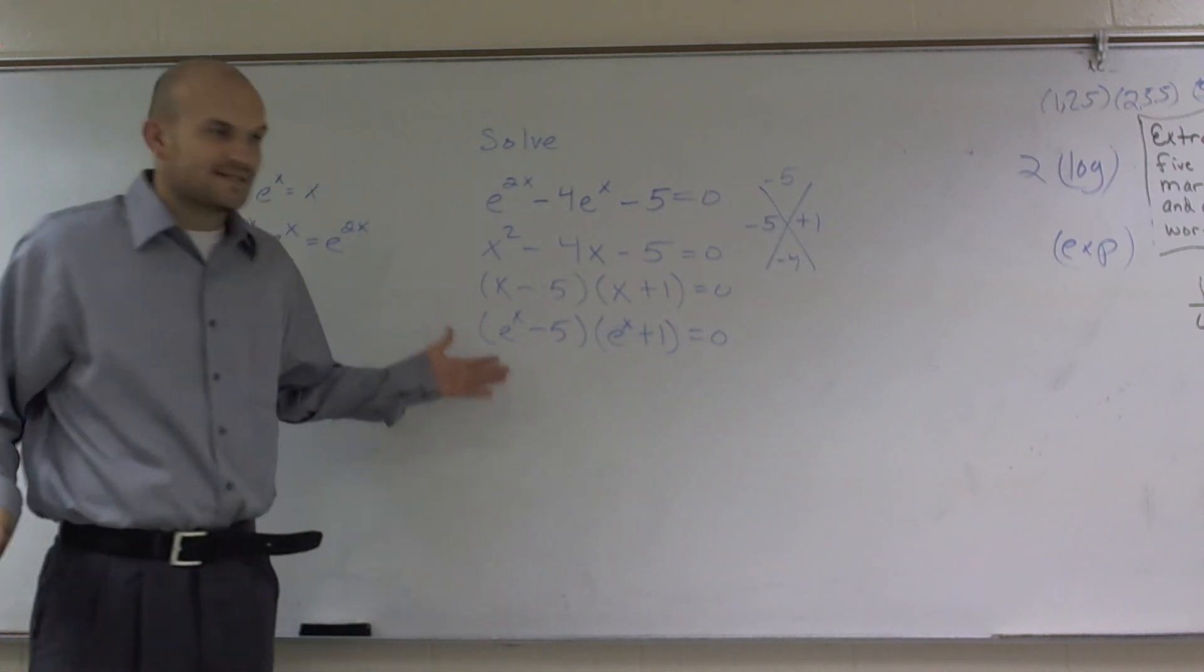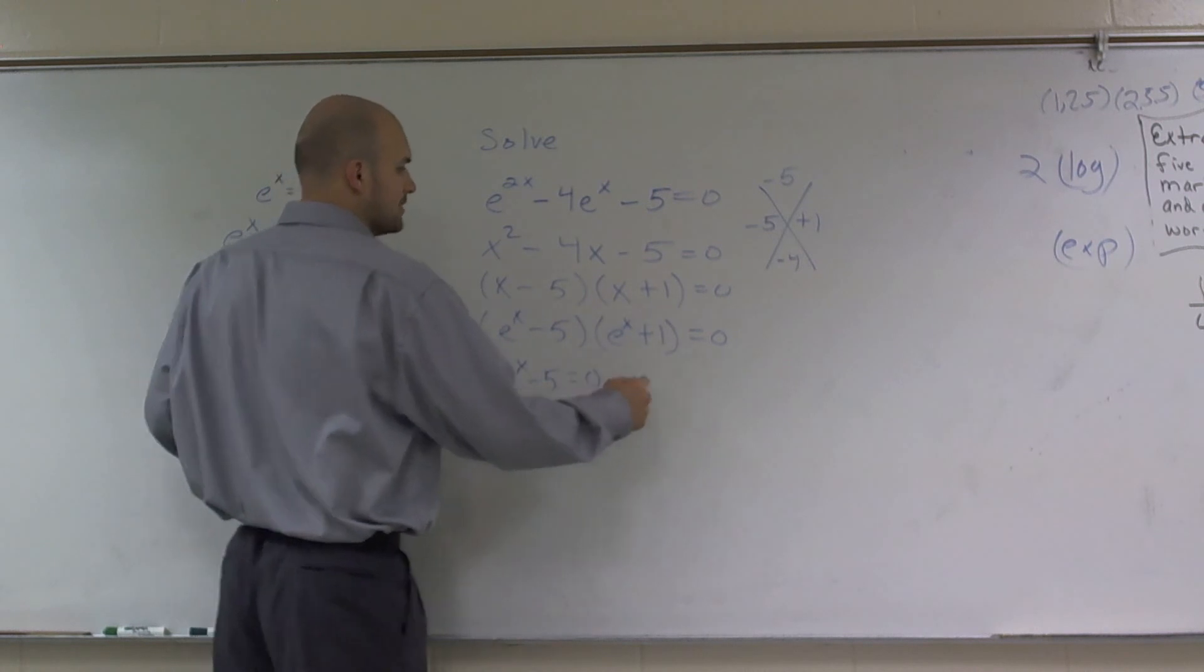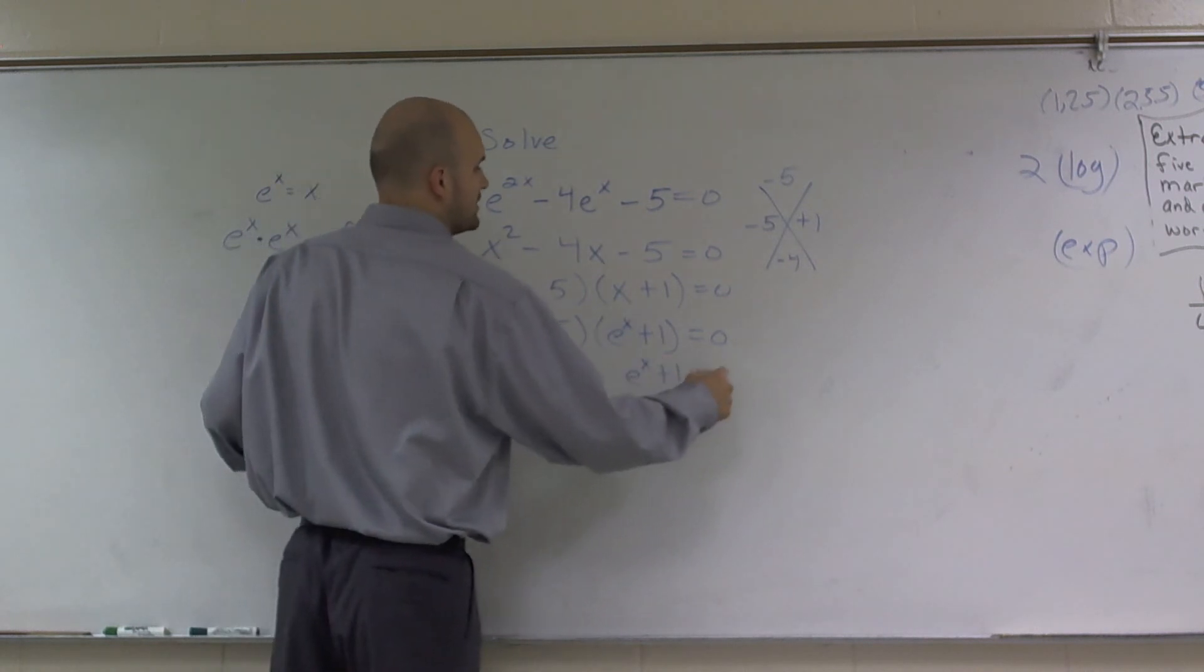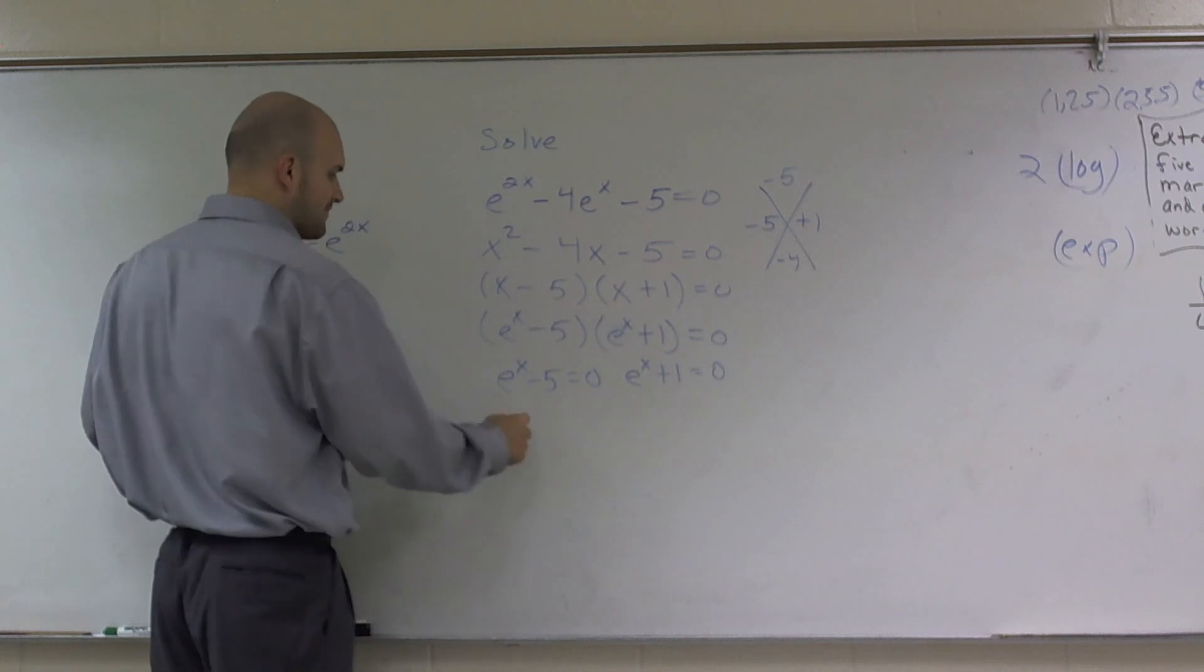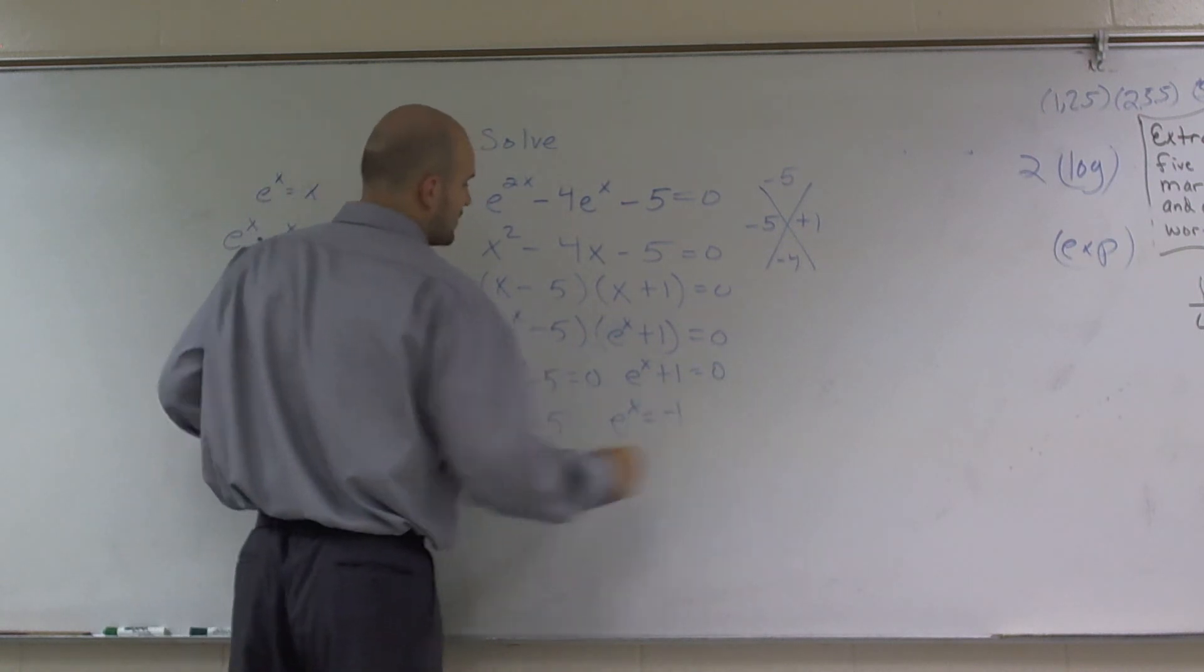So now we set each one of these equal to 0. So I say e to the x minus 5 equals 0, and e to the x plus 1 equals 0. So therefore, I have e to the x equals 5 and e to the x equals negative 1.